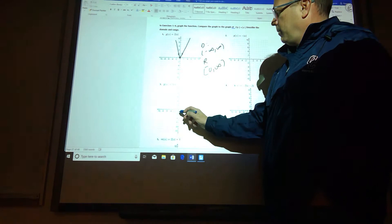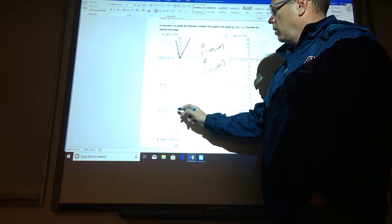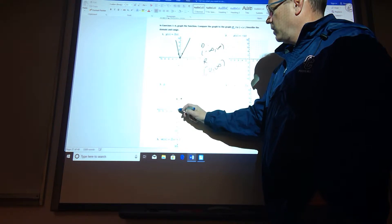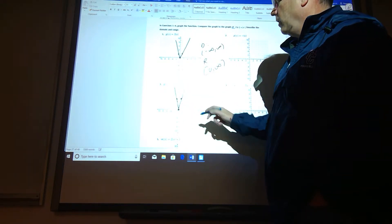Number 3, still it's going to happen at 0, 0, but it's going to go right one up 5 because there's a 5 out front, left one up 5. So it's kind of a skinny absolute value graph.